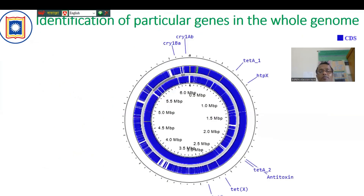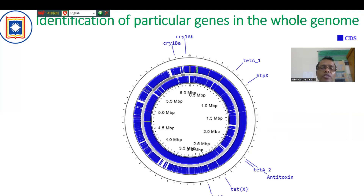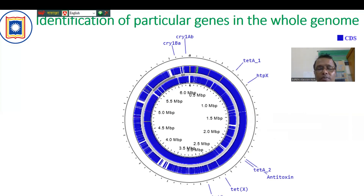You can pick what type of gene you are interested in. For example, if you want to show some cry genes — Bt genes B1, B2, and also Cry A, B, C — if those genes are present in your sample, you can show them. You can also show tetracycline resistance genes such as tetracycline A, tetracycline A2, and other important proteins in your figure.